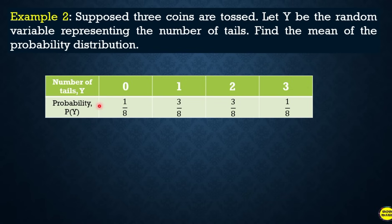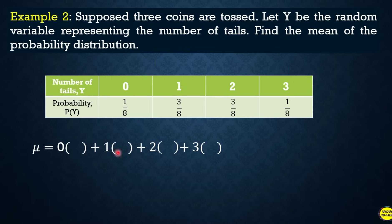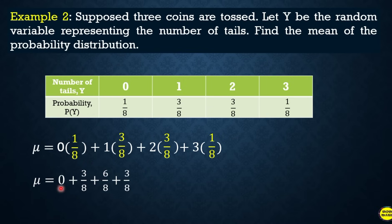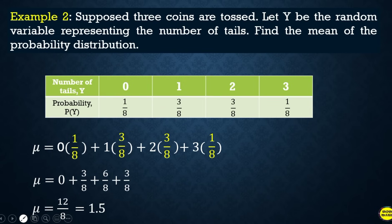Now we compute the mean value. Multiply the value of the random variable times the corresponding probability and get the summation: zero times one-eighth, plus one times three-eighths, plus two times three-eighths, plus three times one-eighth. That is zero, plus three-eighths, plus six-eighths, plus three-eighths. Since these are similar fractions, we add the numerators: three plus six plus three equals twelve, giving twelve-eighths.